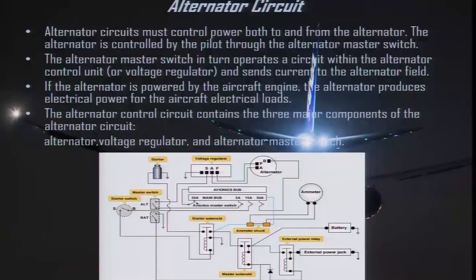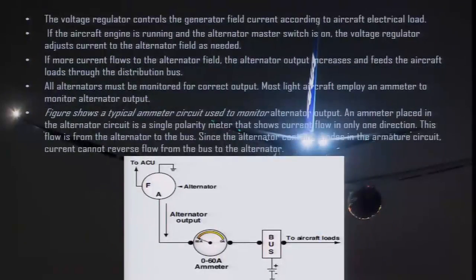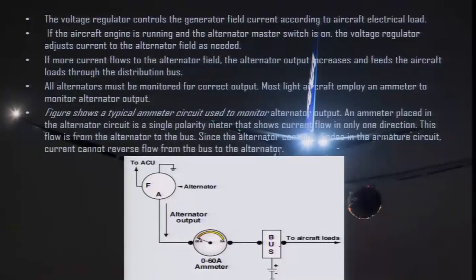This is how a basic alternator circuit operates. An ammeter is placed in the alternator circuit which shows that current flow is flowing in one direction — from the alternator to the bus. Since the alternator has diodes, the current cannot flow from the bus to the alternator. So this was about the alternator circuit — we have seen how the battery circuit functions and how an alternator circuit functions.